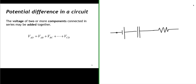I'll call the point to the left of the battery point A, the point between the battery and the capacitor point B, the point between the capacitor and the resistor point C, and the point on the opposite side of the resistor point D.